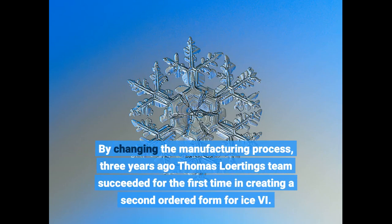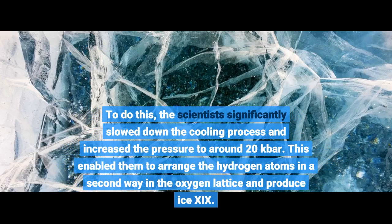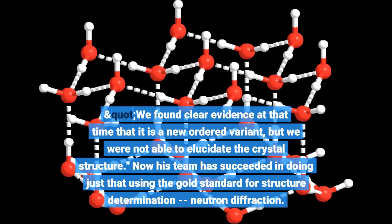By changing the manufacturing process, three years ago Thomas Loring's team succeeded for the first time in creating a second ordered form for ice V. The scientists significantly slowed down the cooling process and increased the pressure to around 20 kilobars. This enabled them to arrange the hydrogen atoms in a second way in the oxygen lattice and produce ice 19. They found clear evidence that it is a new ordered variant, but were not able to elucidate the crystal structure at that time. Now his team has succeeded in doing just that using the gold standard for structure determination, neutron diffraction.